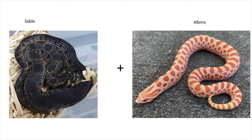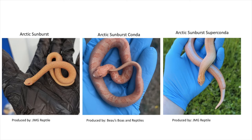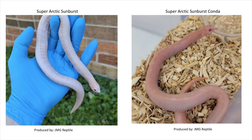Next we have sable combined with albino, which is called a sunburst — a very vibrant orange snake. We have the sunburst, the sunburst conda, and the sunburst super conda. Taking it a step further by adding the arctic gene gives some really unique snakes — definitely one of my favorite sable combinations. The super arctic version of the sunburst is not my favorite; I think the super arctic takes away a lot of that orange pigmentation and makes it more of a pink snake, but it's definitely a genetic powerhouse.